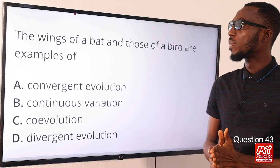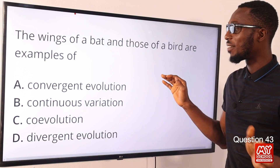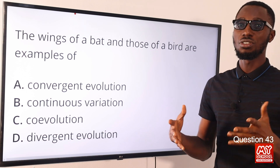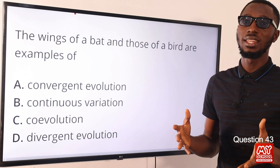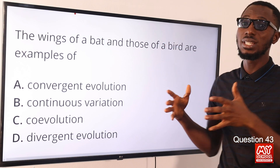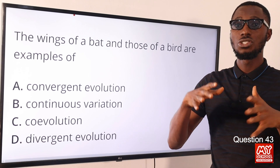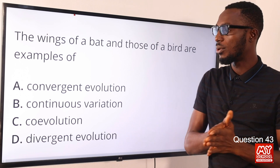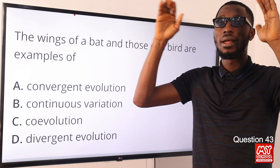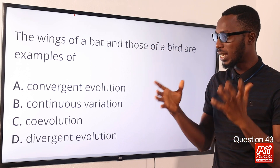Question 43. The wings of a bat and those of a bird are examples of convergent evolution. Two unrelated species showing a similar physical feature — especially in functionality — is convergent evolution. You can also see this in the streamlined body of a dolphin, a mammal, and a shark, a fish. Different organisms, but they have a similar expression of at least one or two physical features.